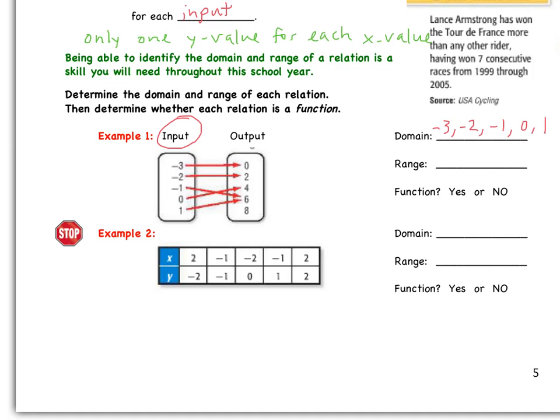The range, remember another way we can talk about range is the output values. So all we have to do is copy down the values that have an arrow pointing to it in this box. So that would be zero, two, four, and six. Doesn't look like eight has an arrow pointing to it.